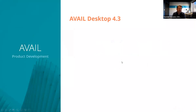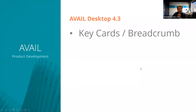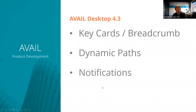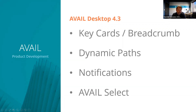As a reminder, we released what we consider a major update — Avail Desktop 4.3 — back in late September, right before Autodesk University. If you haven't downloaded it yet, you should. It includes great new features such as key cards, a new dynamic paths feature, and some updates to the way notifications work, which should be helpful for those working with Avail on a daily basis from a publishing standpoint.